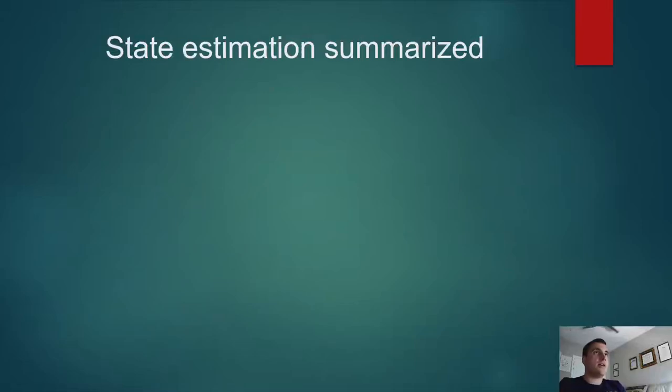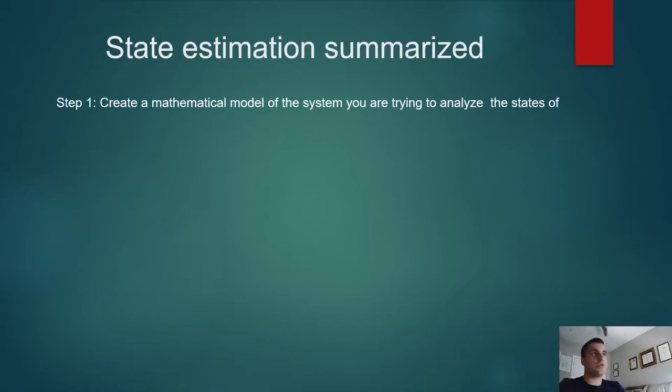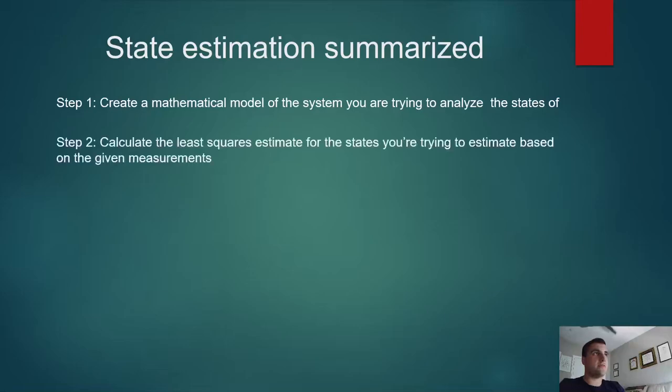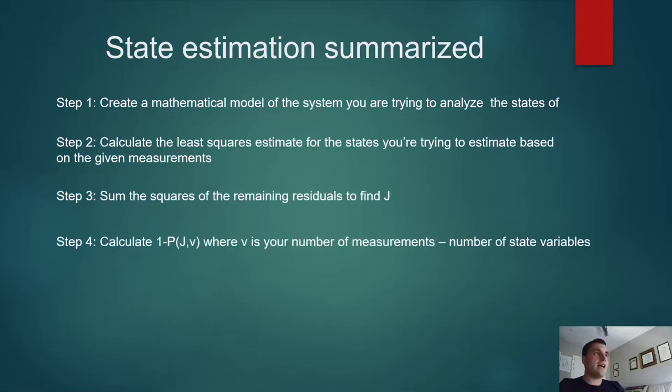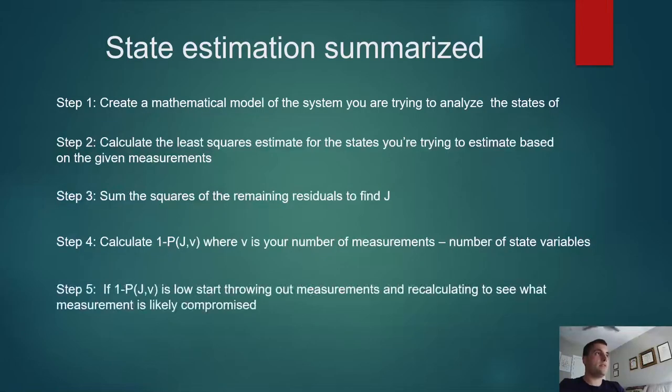In summary, state estimation: step one, create a mathematical model of the system you're trying to analyze the states of. Calculate the least squares estimates for the state you're trying to estimate based on the given measurements. Sum the squares to give you j. Calculate one minus the chi-squared test output, where V is your degrees of freedom, and look at the output and see if your measurements make sense.